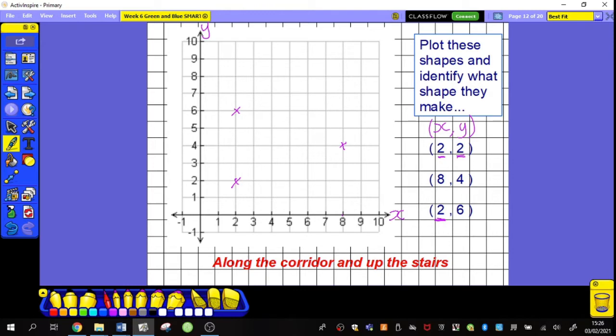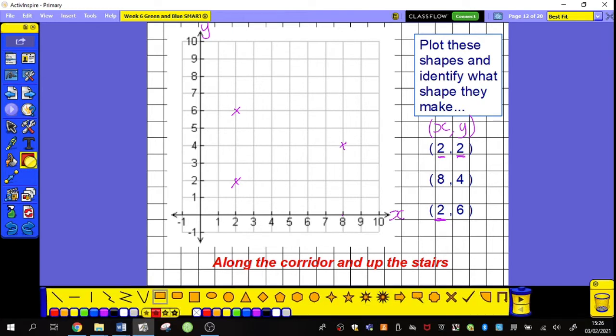Now, I told me to plot the shape. At the moment, these are just X's. This is just the coordinates. So I need to now plot the shape that this makes. So, I'm going to be drawing with a ruler, if you can, a straight line from there to there. Joining up my coordinates. There we go.